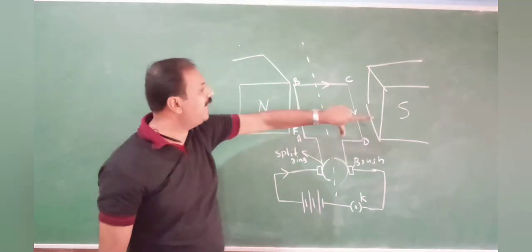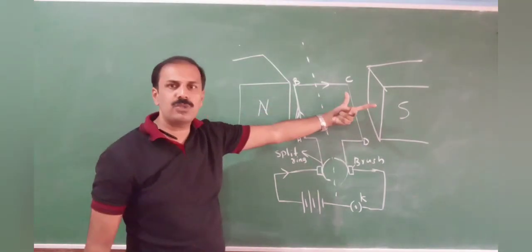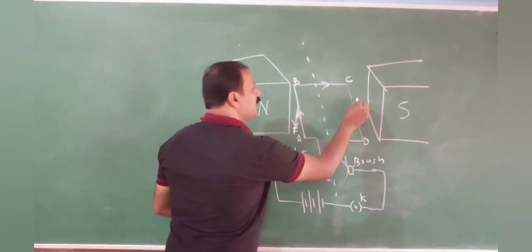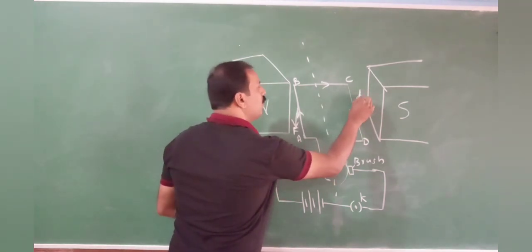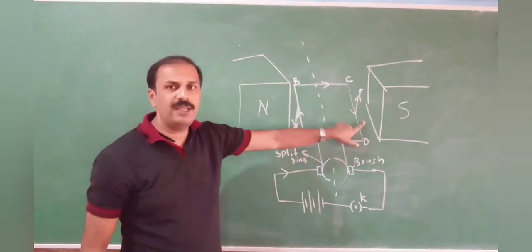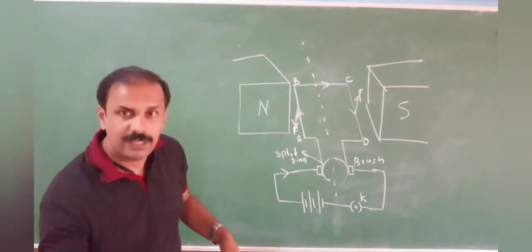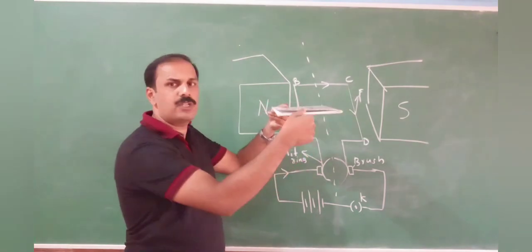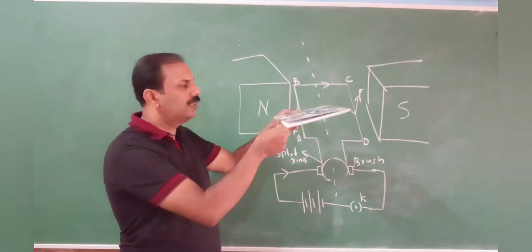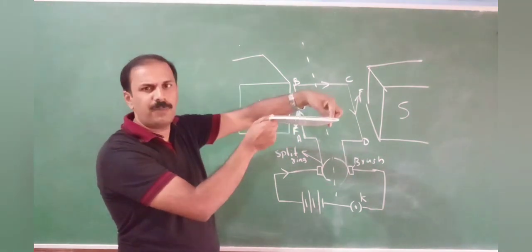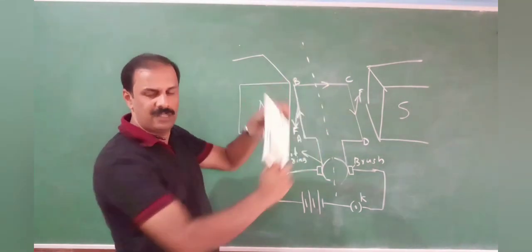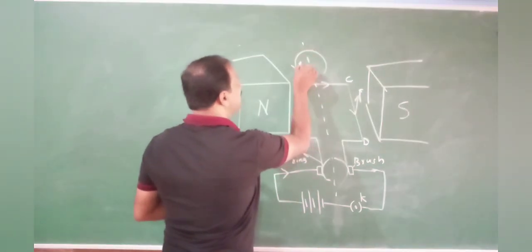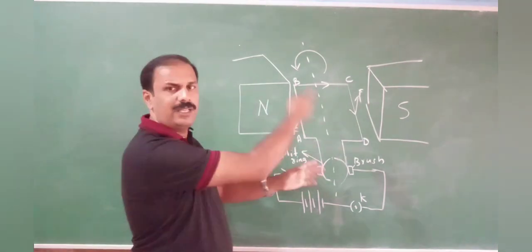Now if I take the same for CD, here the current is coming towards you, so applying Fleming's left-hand rule, the force will be upward. So here the force is downward and here it is upward. Your plane is like this — here it is downward, here it is upward. So what will happen? It will turn like this. Here a downward force is applied, here an upward force, so it will rotate. That is what happens in the case of an electric motor — the electric motor is rotating like this.